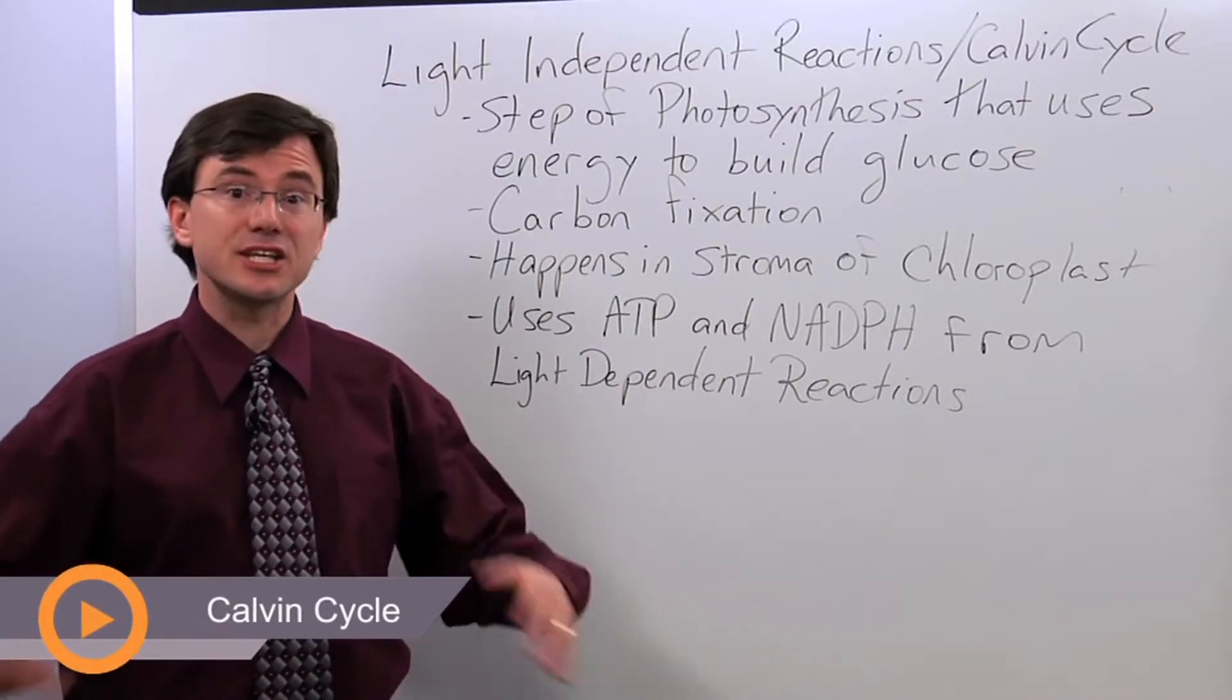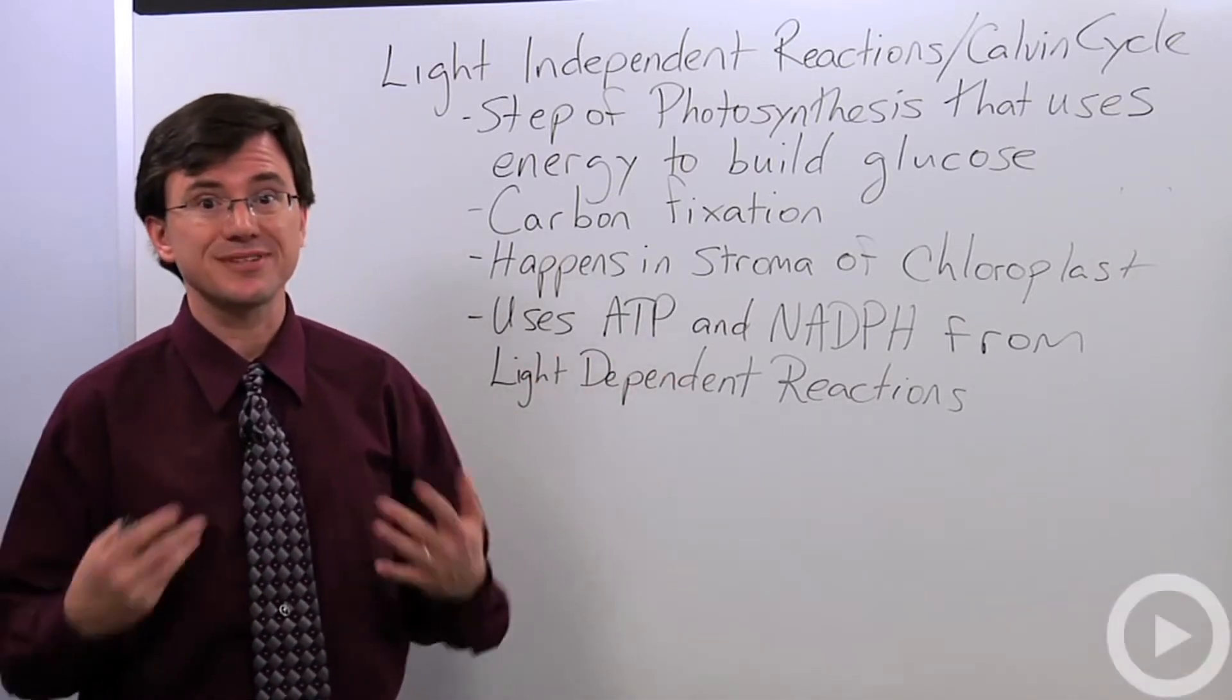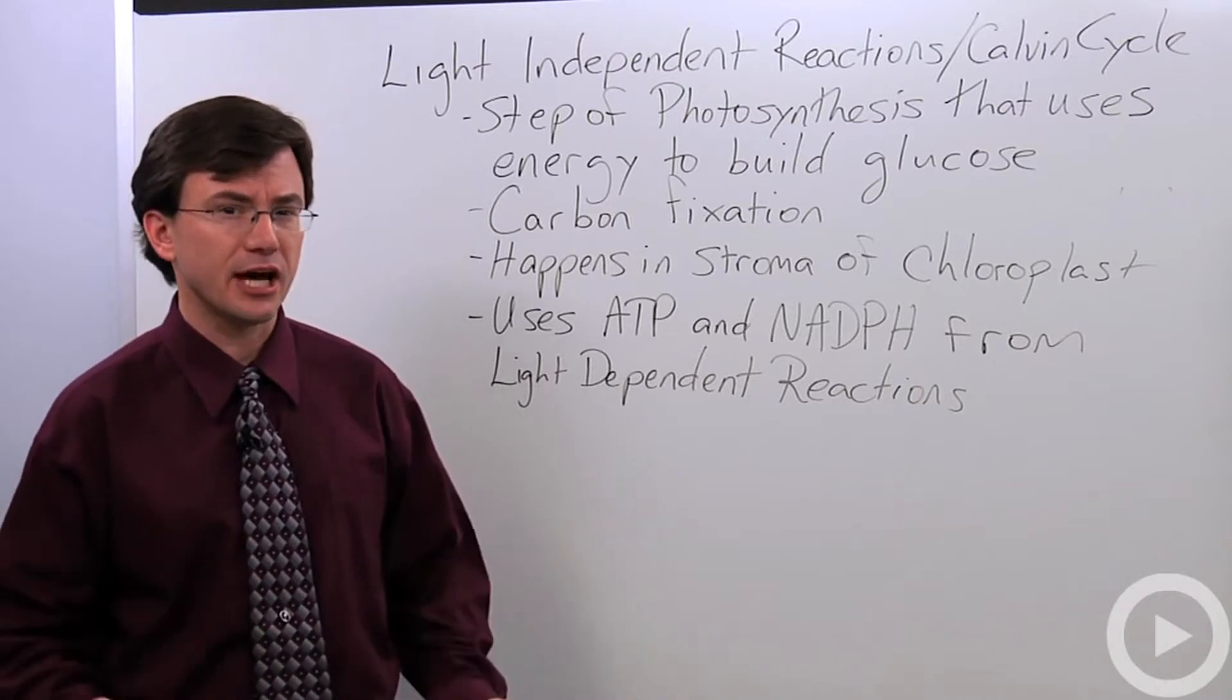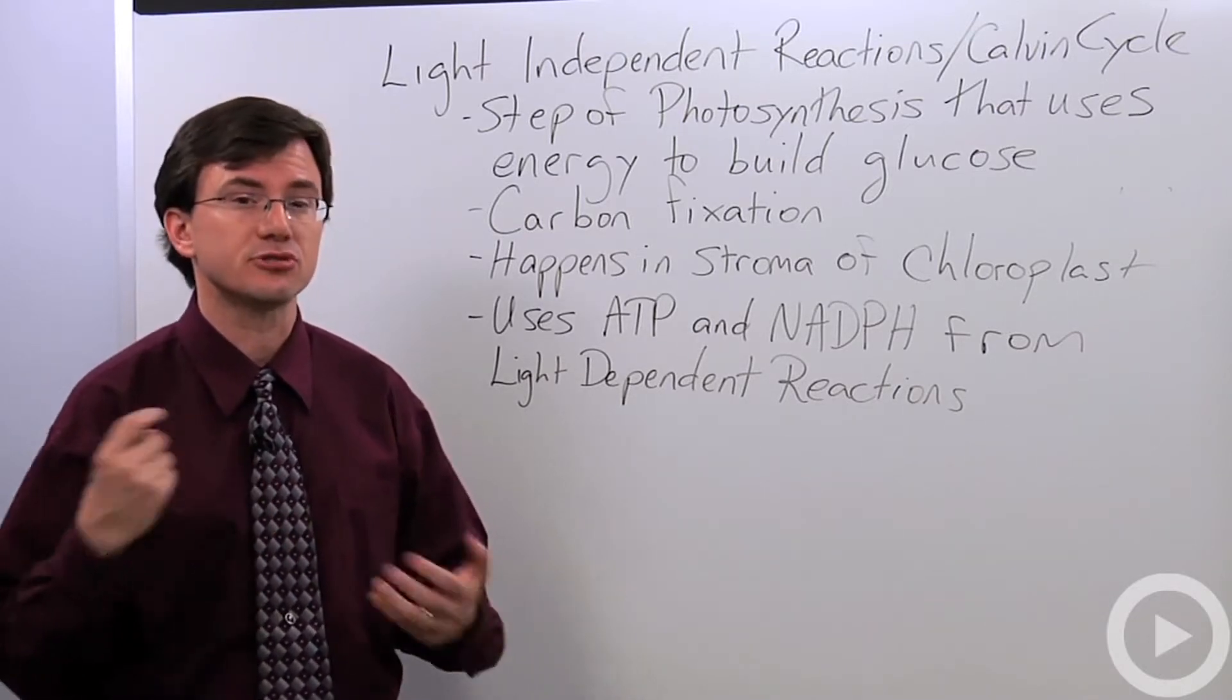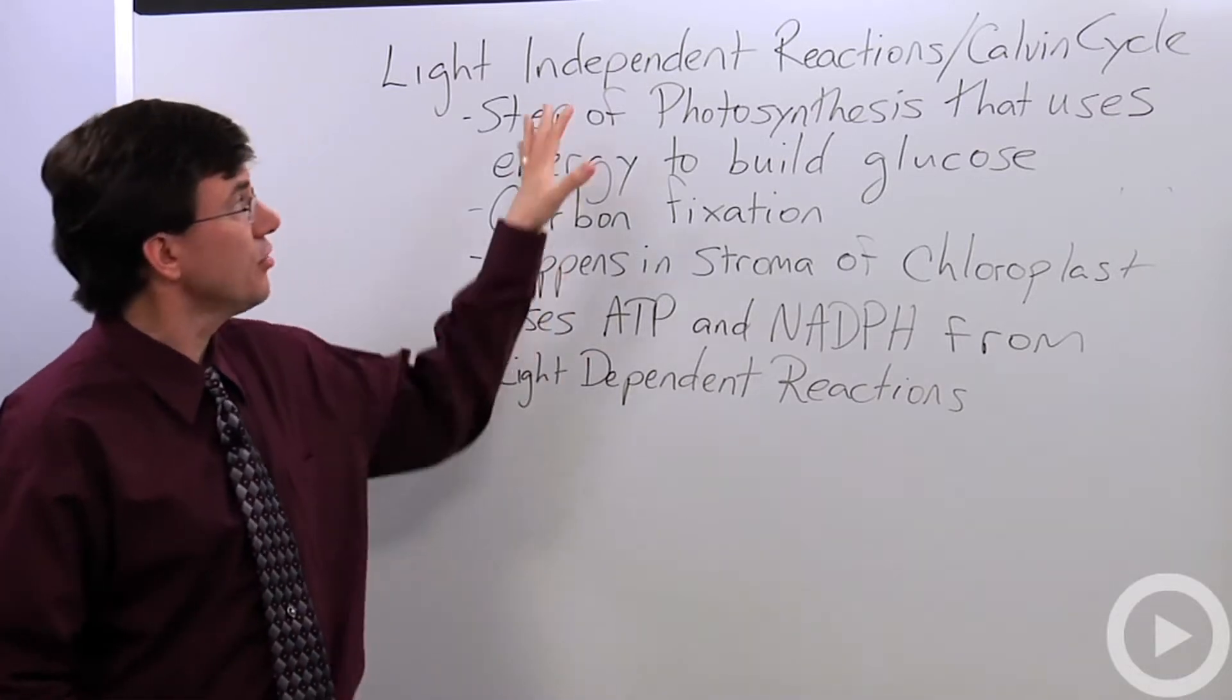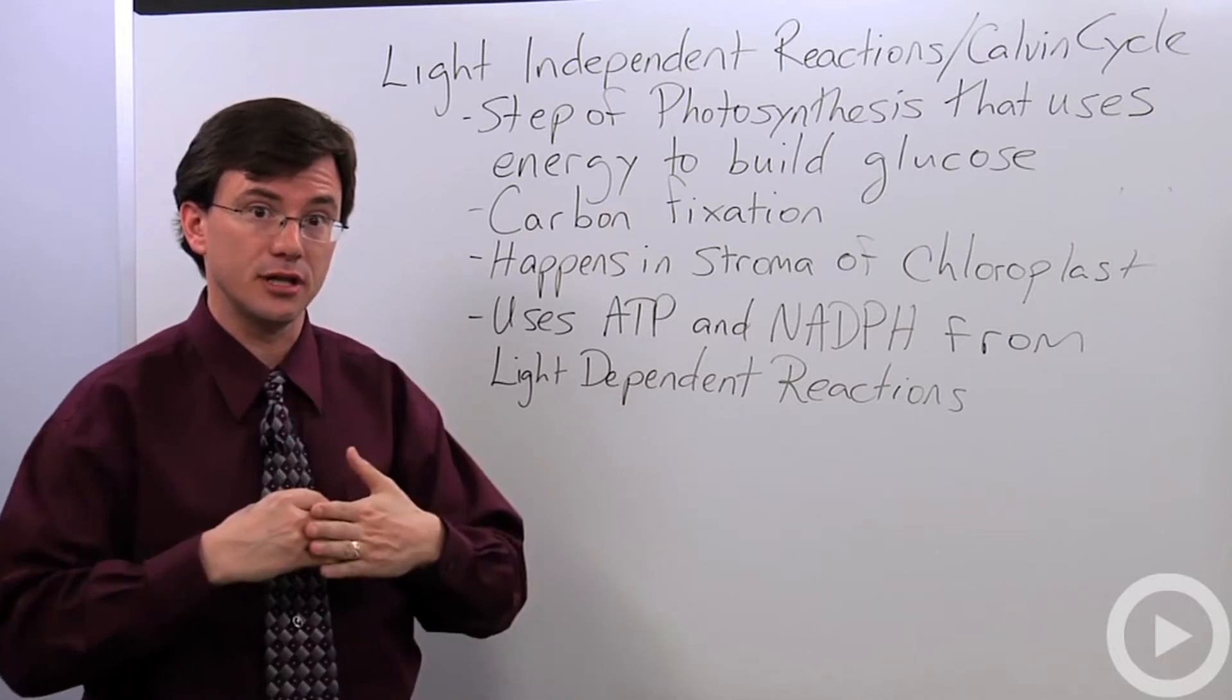Photosynthesis is a two-step process. The first step is the light-dependent reactions. The second step is called the light-independent reactions. I often will just simply call it the Calvin Cycle. It makes it easier for my students to remember and hear the difference between the two steps.